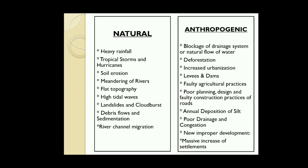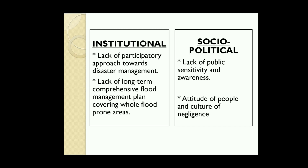Anthropogenic causes include blockages of drainage systems or natural water flow, deforestation, increased urbanization, levees and dams, faulty agricultural practices, poor planning and design, faulty construction practices of roads, annual deposition of silt, poor drainage and congestion, new improper developments, and massive increase of settlements.